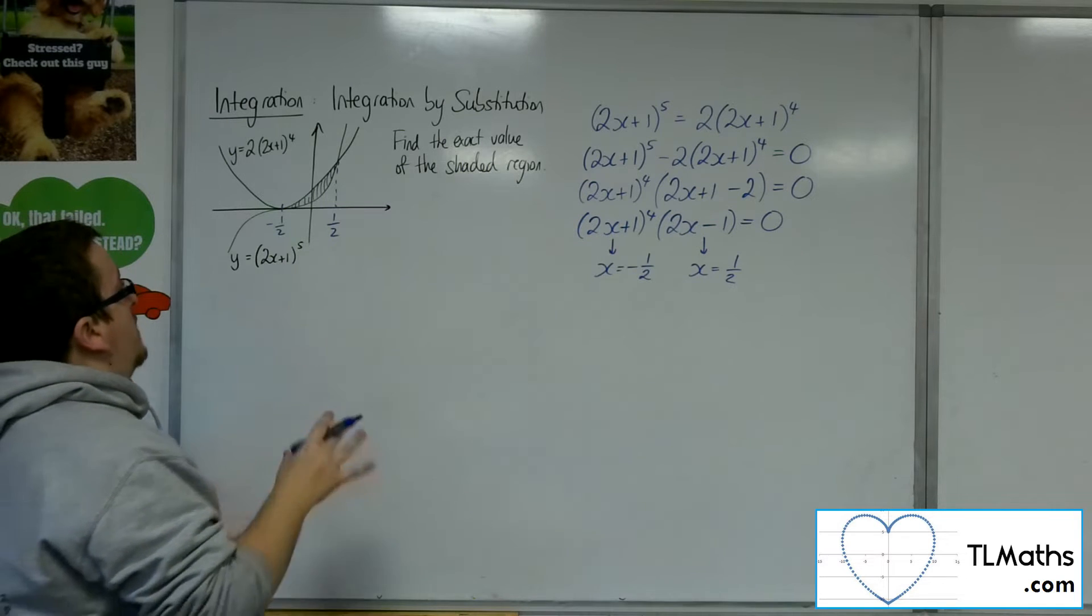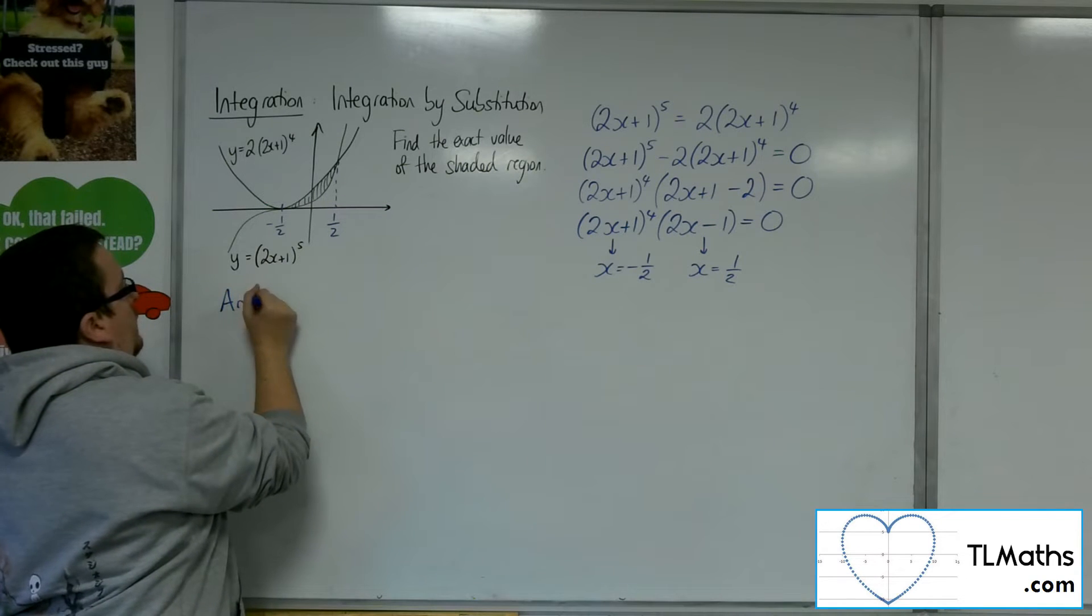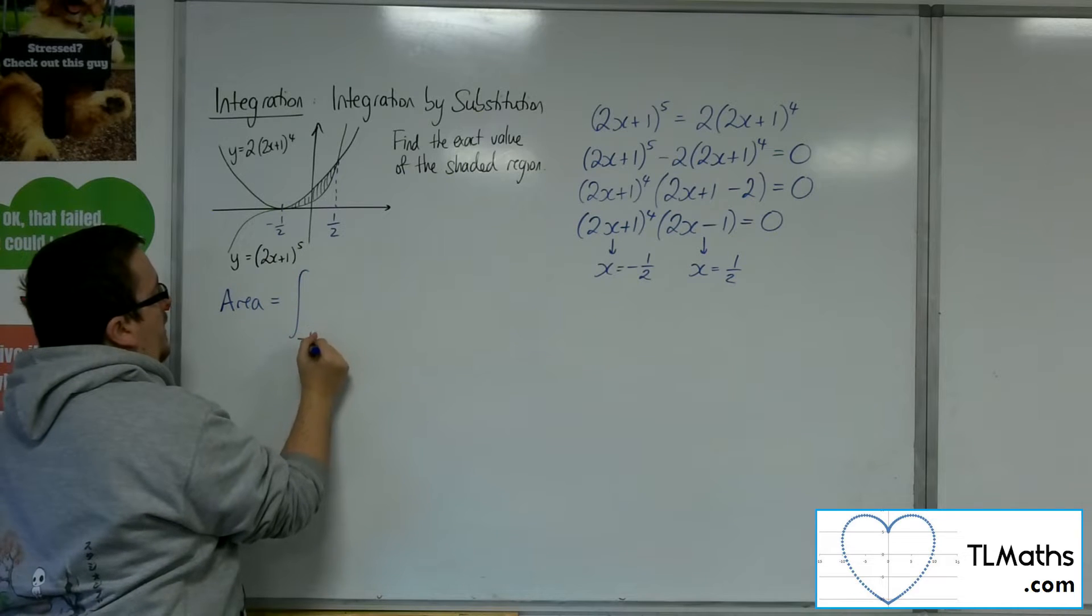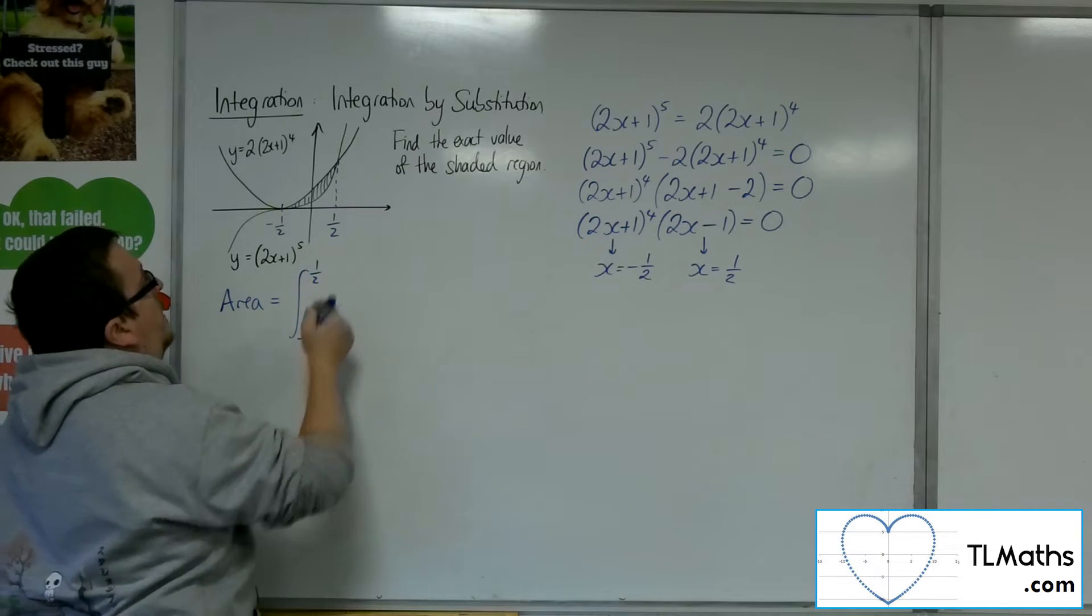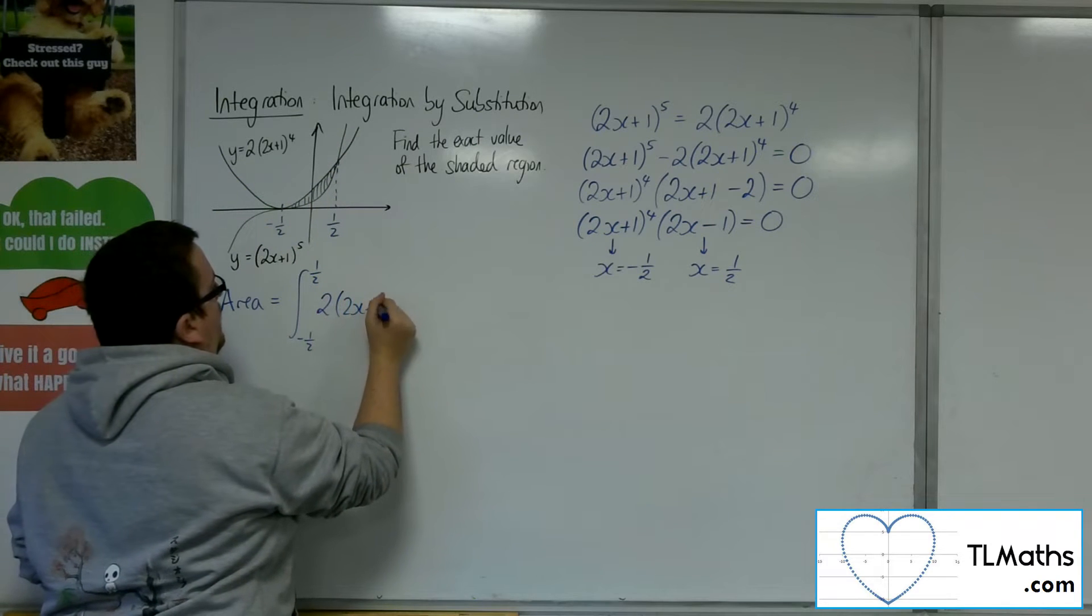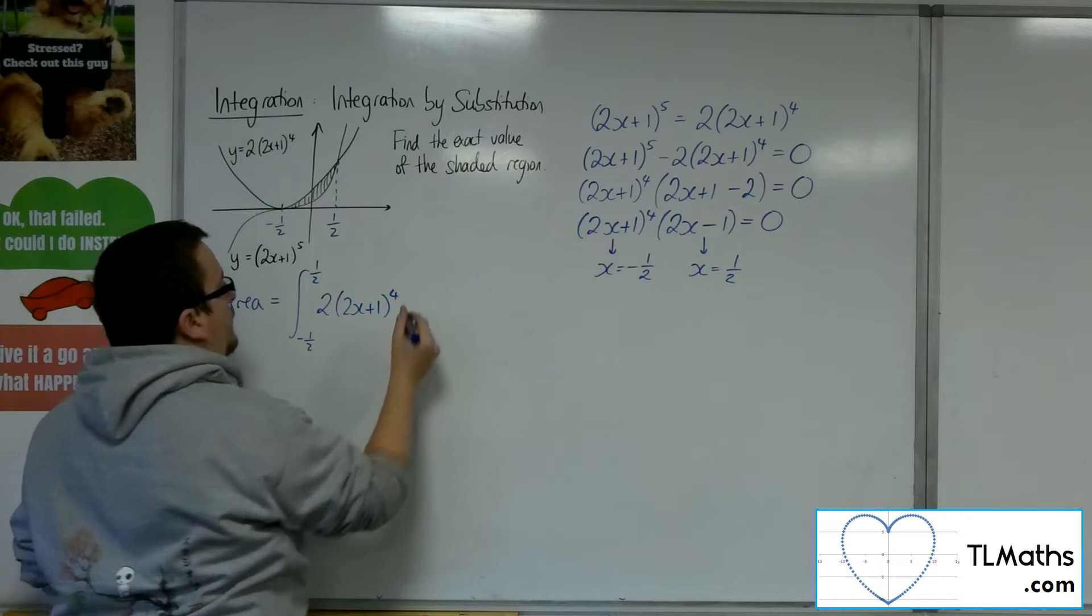So the area that I need is the integral between minus 1 half and 1 half of the upper curve, so the 2 lots of 2x plus 1 to the 4 dx.